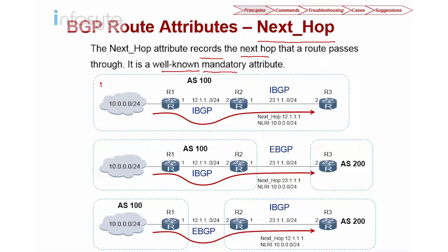We have three scenarios here. In the first scenario, R1 has the 10 network that needs to be advertised in all IBGP network relationships. R1 will have a full mesh between R1 and R2, and R1 to R3. When R1 advertises to R2, the next hop is 12.1.1.1. When R1 advertises to R3, the NLRI for the 10 network still shows 12.1.1.1 even though R1 doesn't connect to R3 directly. Within IBGP, the next hop is not changed — it remains as the local advertisement interface, which is 12.1.1.1.